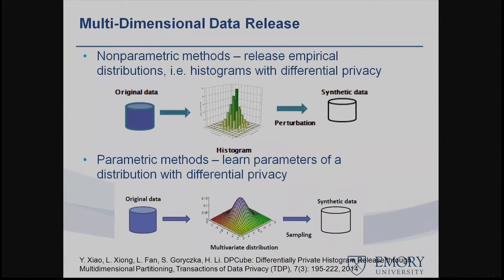For multidimensional data, a direct way is to release an empirical histogram of the original data to support cohort discovery queries or predictive analysis. One of our first contributions is a histogram method called DPQ, which adds noise to the histogram to make it differentially private, and through various data partitioning strategies achieves good or optimal utility.